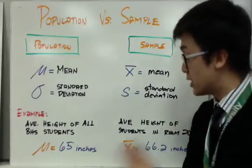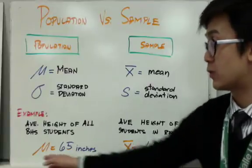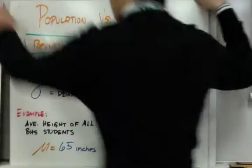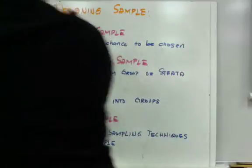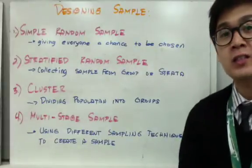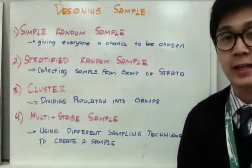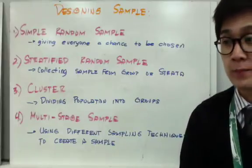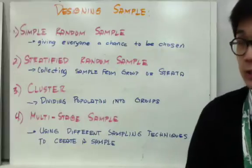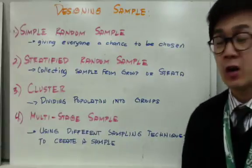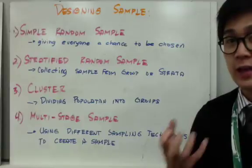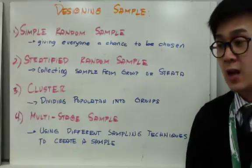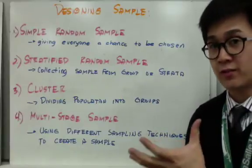Those are just made-up numbers to illustrate the difference between mu and X-bar. There are several techniques in designing an experiment and finding a sample from a population. It's important that you know these techniques because finding a good sample is important in statistics to generalize a more accurate result based on the population.